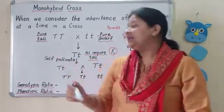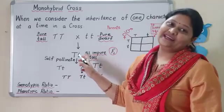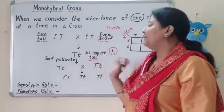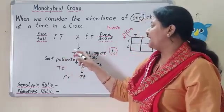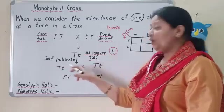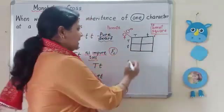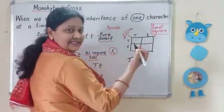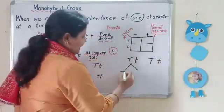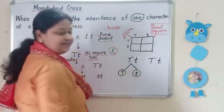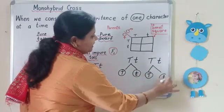All impure tall means it is tall but in a heterozygous condition. Now we will self pollinate this F1 generation. We take capital T small t and capital T small t and self pollinate them. Now what gametes will this form? It will form two types: one capital T and one small t. Similarly, the other parent will also form capital T and small t.